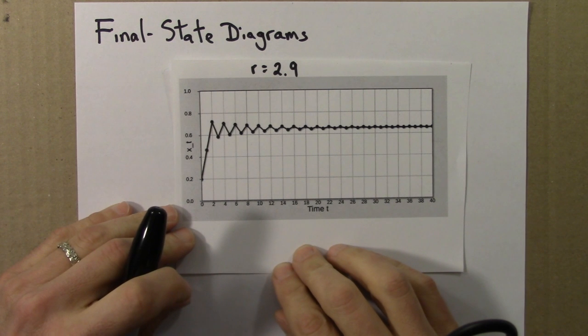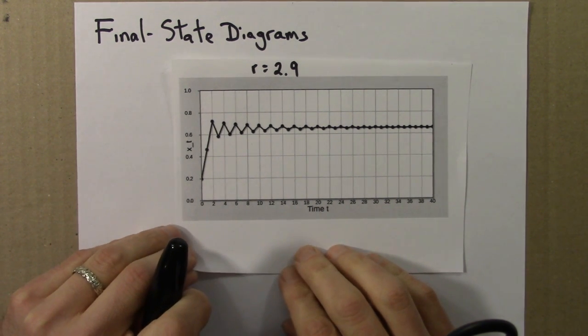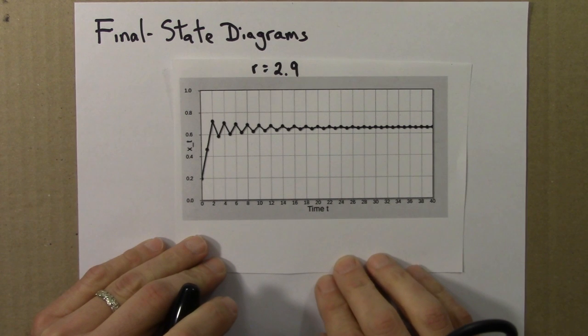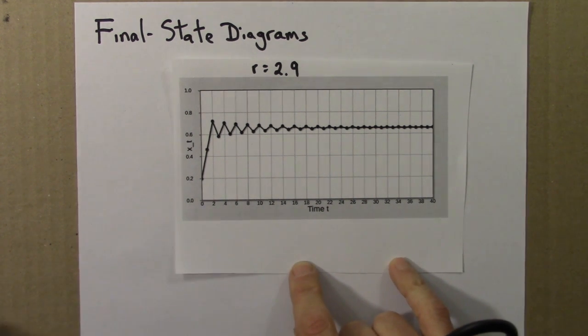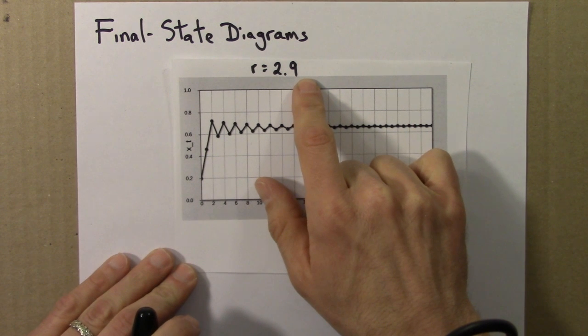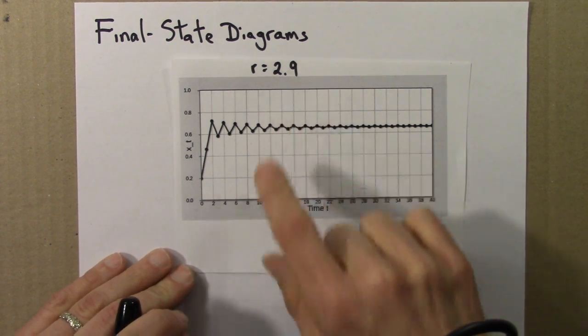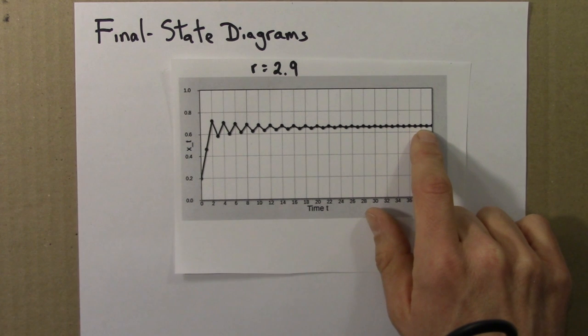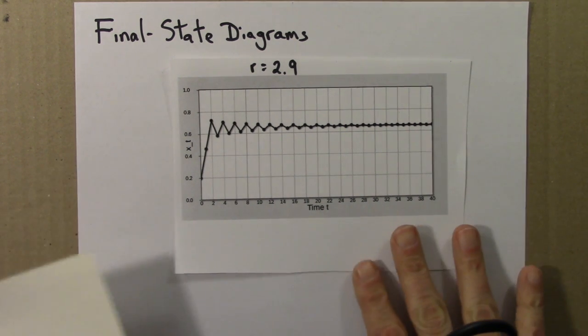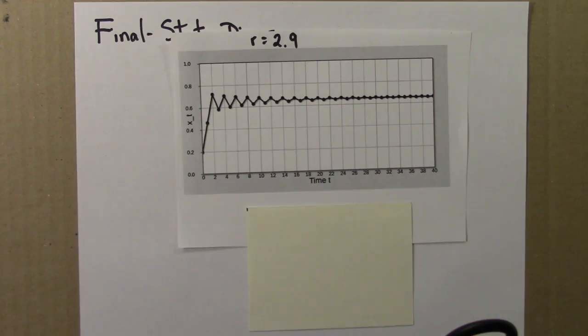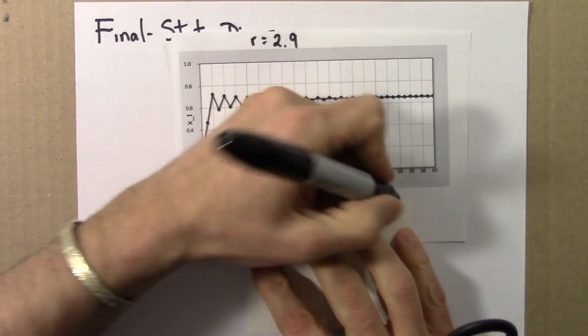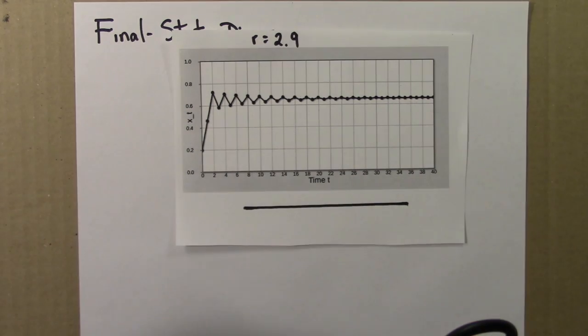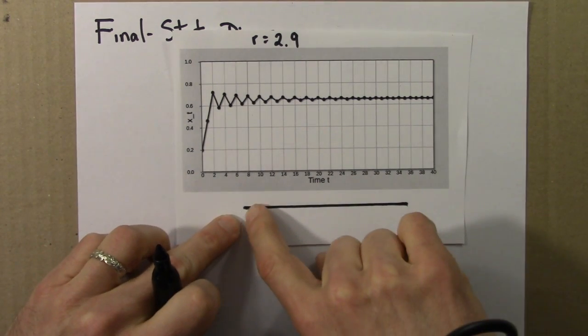For a given R value, we can summarize the behavior of the logistic map with a graphical device called a final state diagram. And I introduced these in unit 3. But I thought it would be good to review them quickly now. So this was the first R value that we experimented with on the website. R is 2.9. And we said there's a fixed point here at about .65 or .66. So I can draw that as follows. So let me draw the line for the phase line. And I'll use this to make this nice and straight.